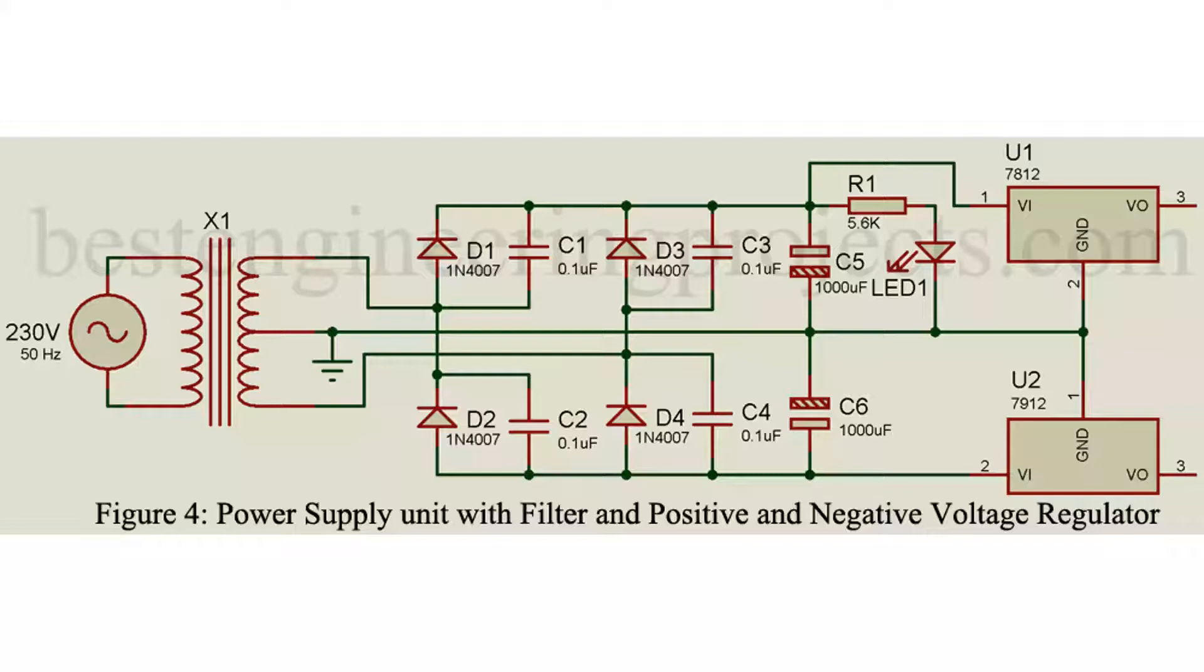Similarly for negative power supply, filtered DC negative output is connected to pin 2, the Vin pin of linear negative voltage regulator IC LM7912. Ground pin, pin 1, is connected to ground. And we will get minus 12 volts at 1 amp output from pin 3.